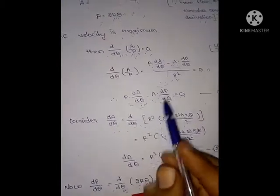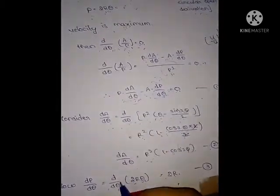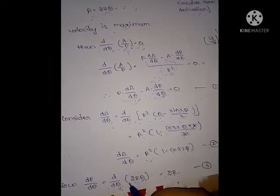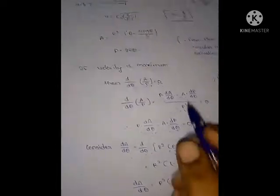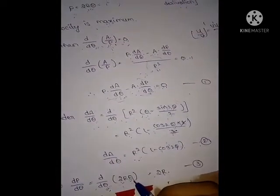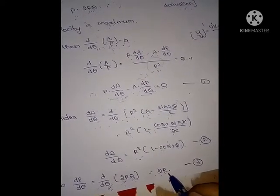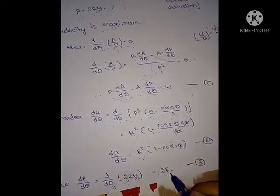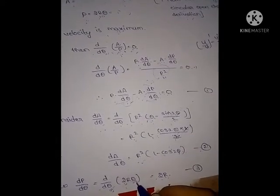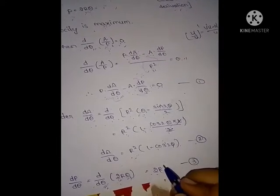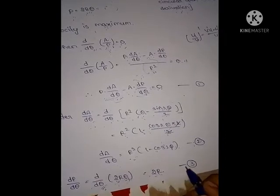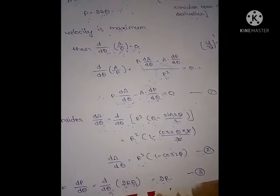Next, we find dP/dθ. Taking P = 2Rθ and differentiating: 2R is constant, and the derivative of θ with respect to θ is 1. So dP/dθ = 2R. This is equation 3.